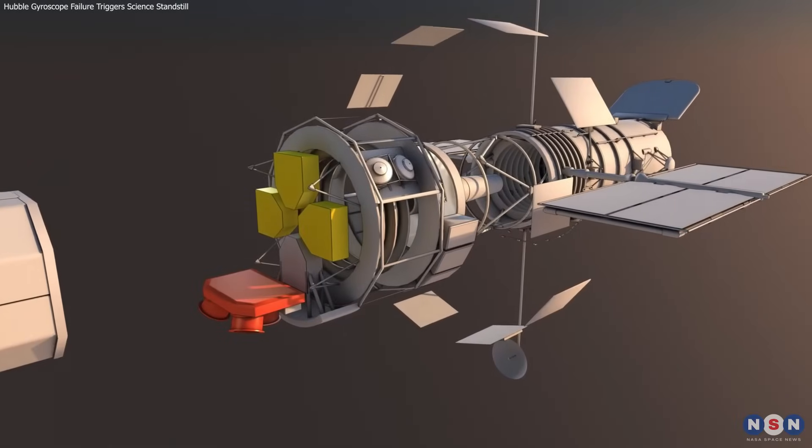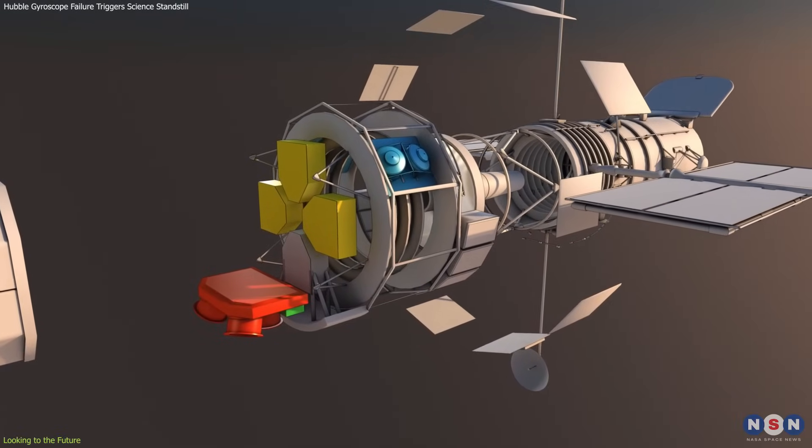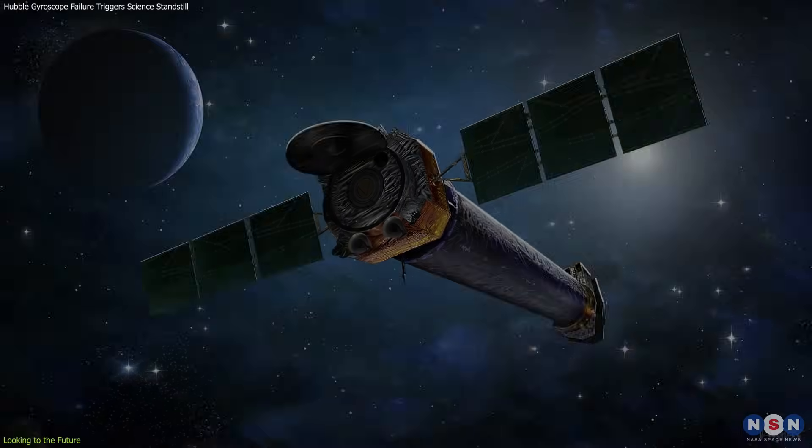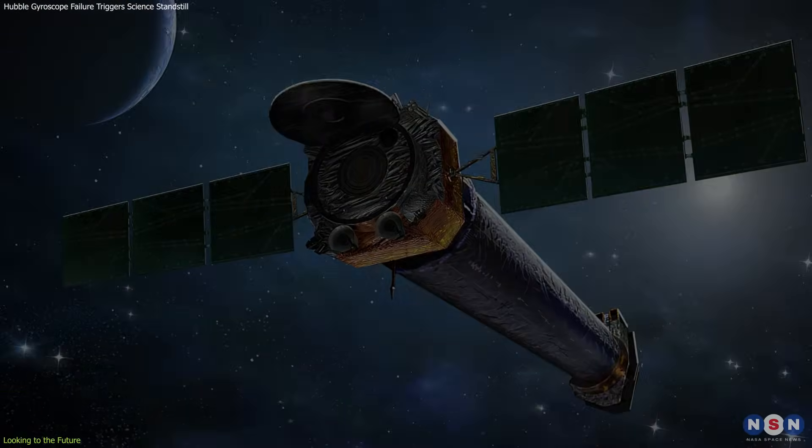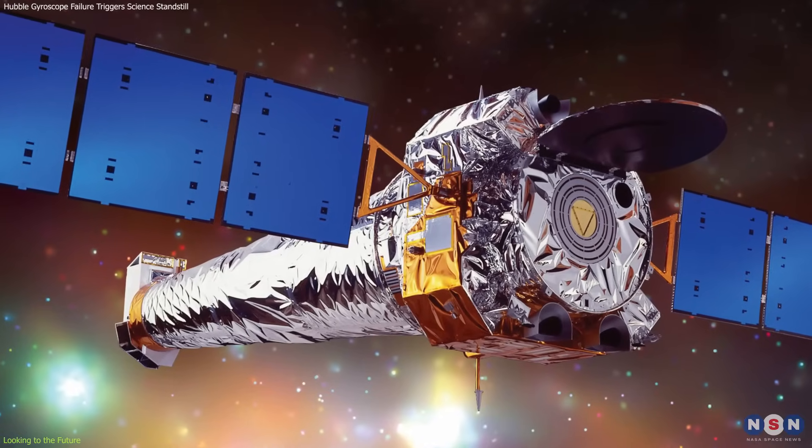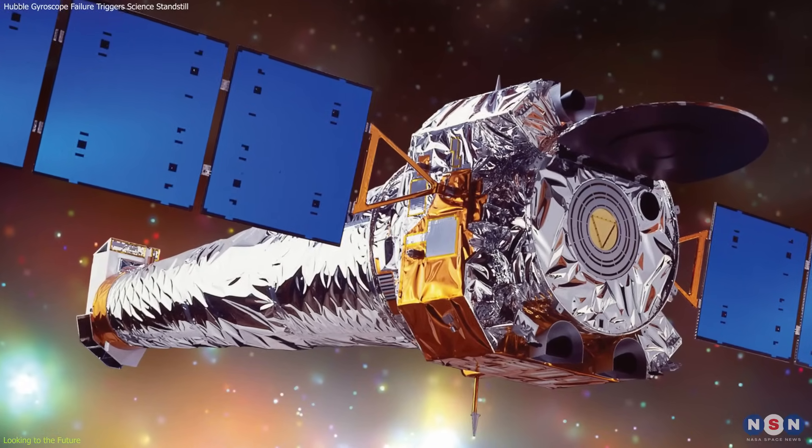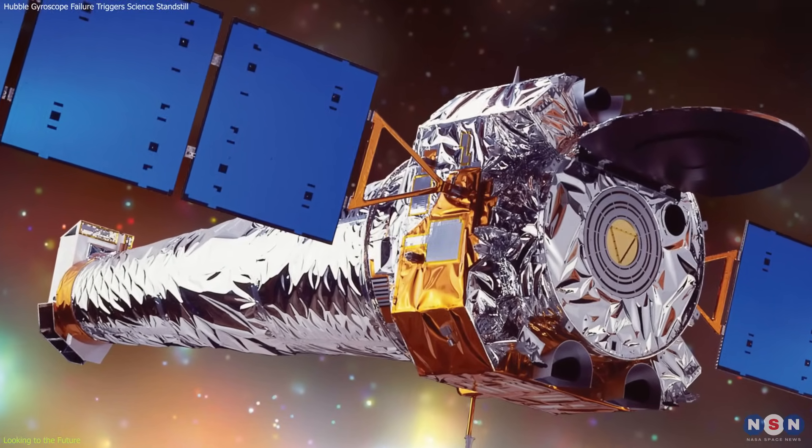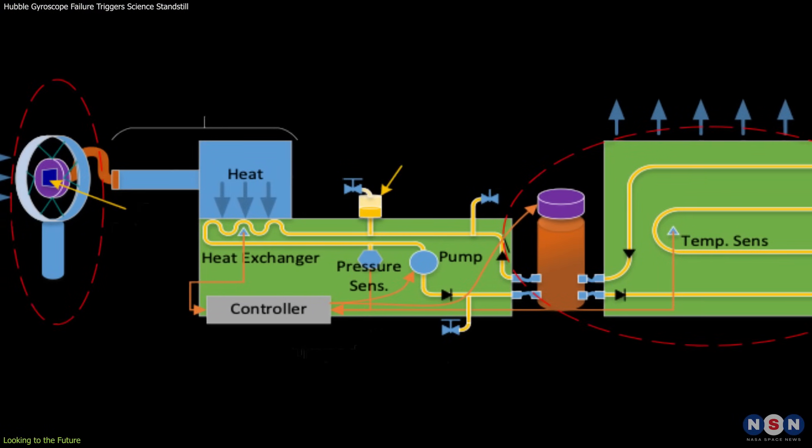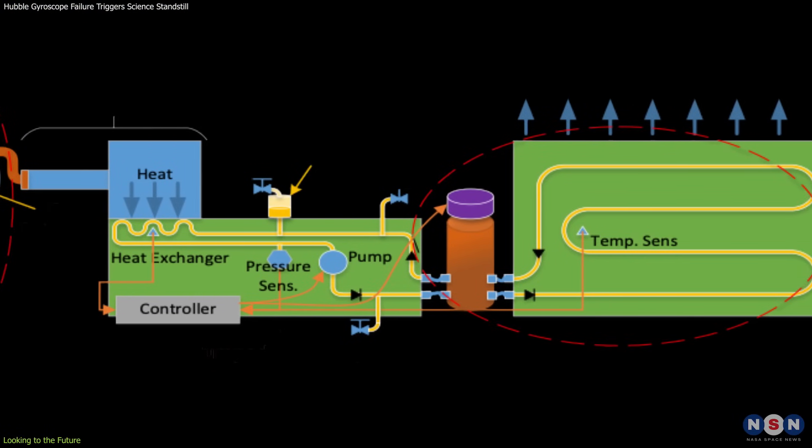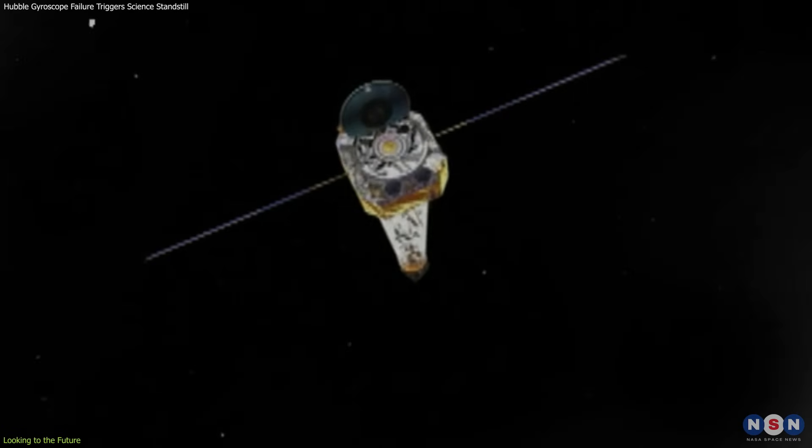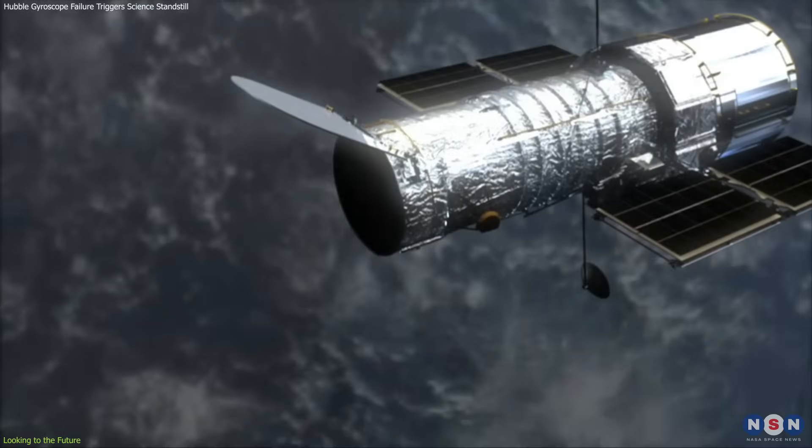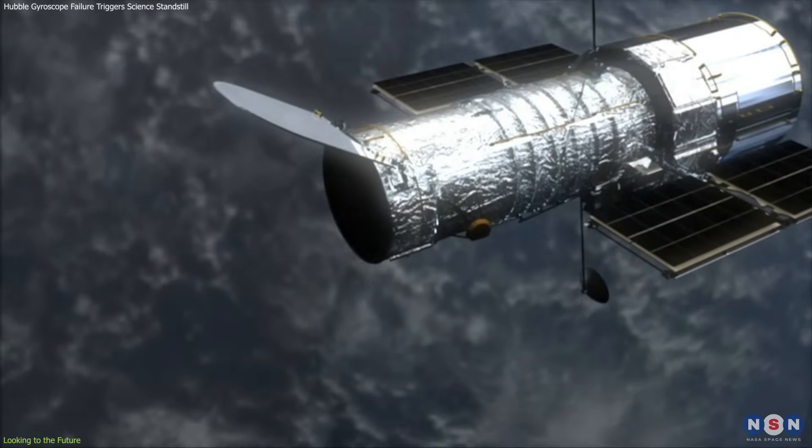The experience with Hubble's gyroscope issues offers critical lessons for similar challenges faced by other observatories like the Chandra X-Ray Observatory. Chandra, like Hubble, has faced significant challenges related to budget constraints and operational issues, particularly with thermal control systems that require active management to keep the telescope functioning properly. The innovative solutions developed to manage these problems provide a template for handling similar issues with Hubble.